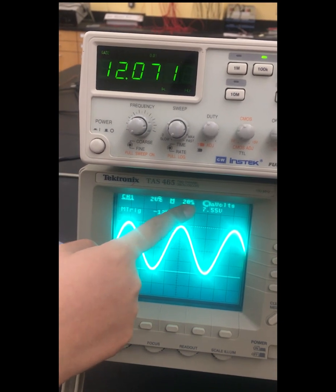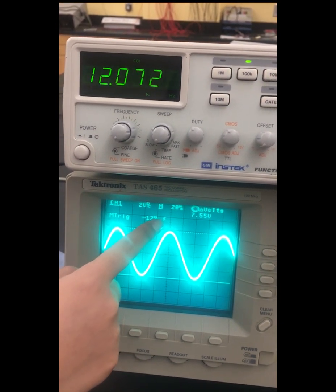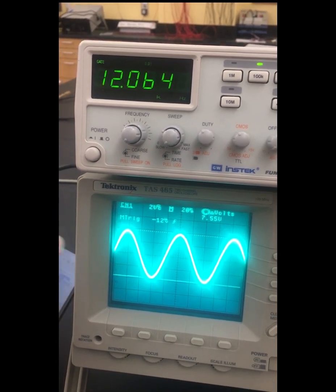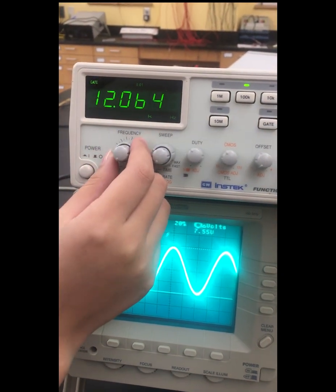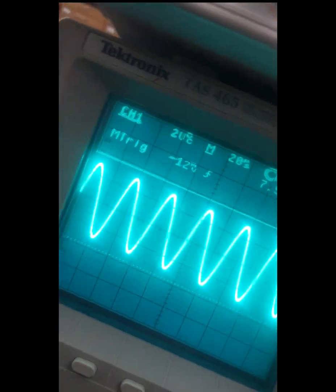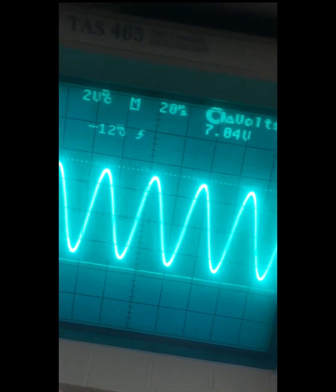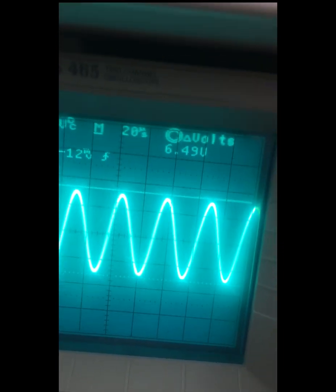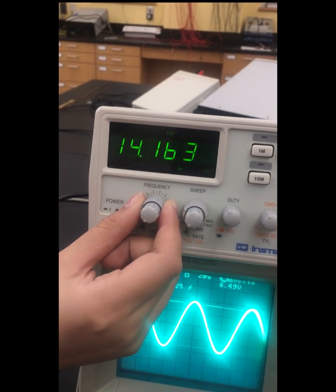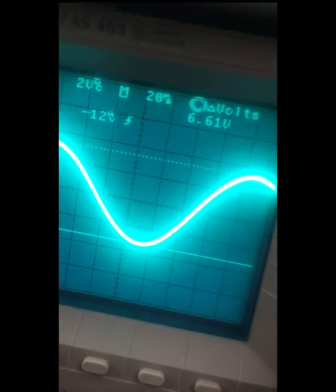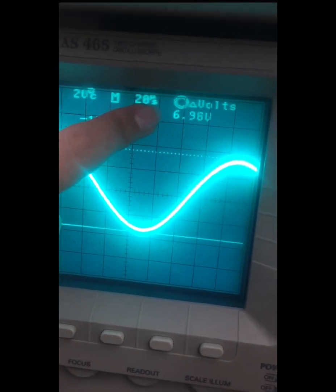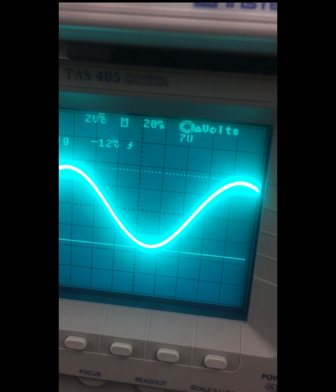Here we can see that when the input frequency equals 1.2 times 10 to the 4th, we have output voltage of 7.55 volts. And if we slightly turn the knobs to the right, we can clearly see there's a decrease in voltage, which is 6.49 volts. And if we turn the knob slightly to the left, we have an output voltage of 6.7 volts.